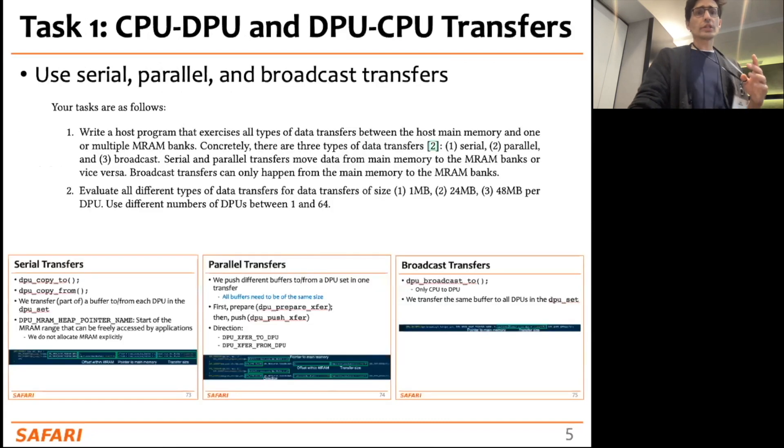As you will see, the first task is about experimenting with the data transfers between the main memory and the PIM-enabled memory - what we call the CPU-DPU and DPU-CPU transfers. Remember from the lecture this morning that there are three different types of transfers: serial, parallel, and broadcast transfers. Here I pasted a screenshot of the slides where I explain the different types of transfers, and also you can see what you need to do in task 1.